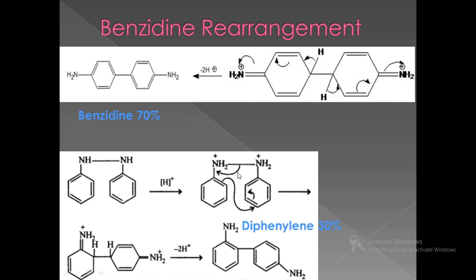How does the minor product form? After the formation of the diprotonated compound, the double bond present in the first benzene ring at the third position attacks the para position of the second benzene ring. So this is not a 5,5-sigmatropic rearrangement — we can describe it as a 3,5-type rearrangement. A proton is then lost to give the compound known as diphenyline. This compound is always present alongside benzidine; however, benzidine is the major product and diphenyline is the minor product.